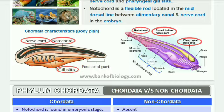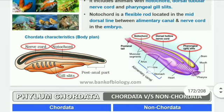Presence of a dorsal hollow nerve cord is a key feature. Its anterior part develops into the brain and the remaining part develops into the spinal cord.